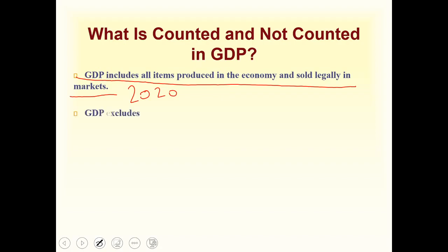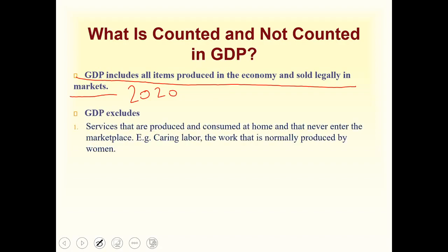What GDP excludes are services that are produced and consumed at home and never entered the marketplace. An example is caring labor — the work normally done by women. So if your mom or sister is working at home, washing dishes or clothes, that is not included in GDP. Also, sales of goods produced outside domestic borders are excluded. Whatever is produced outside China is not included in China's GDP, and whatever is produced outside Pakistan's boundaries is not included in Pakistan's GDP.